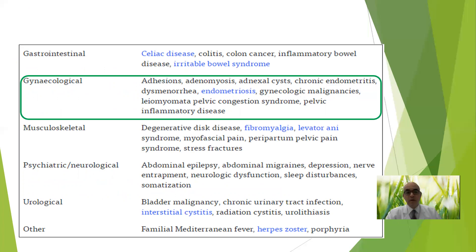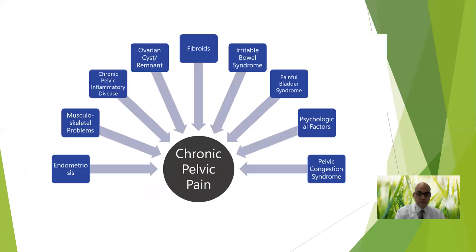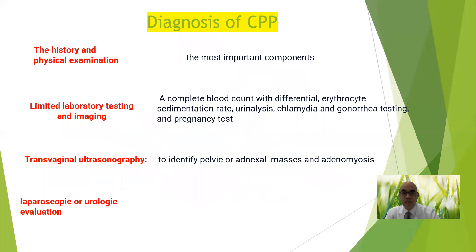Gynecologic causes of chronic pelvic pain include endometriosis, adenomyosis, chronic endometritis, dysmenorrhea, gynecologic malignancies, leiomyomata, pelvic congestion syndrome, chronic pelvic inflammatory disease, and adhesions — plus other organ systems as mentioned. These are the organic causes, but remember it is a state mixing different causes, and you must be broad-minded when evaluating chronic pelvic pain.